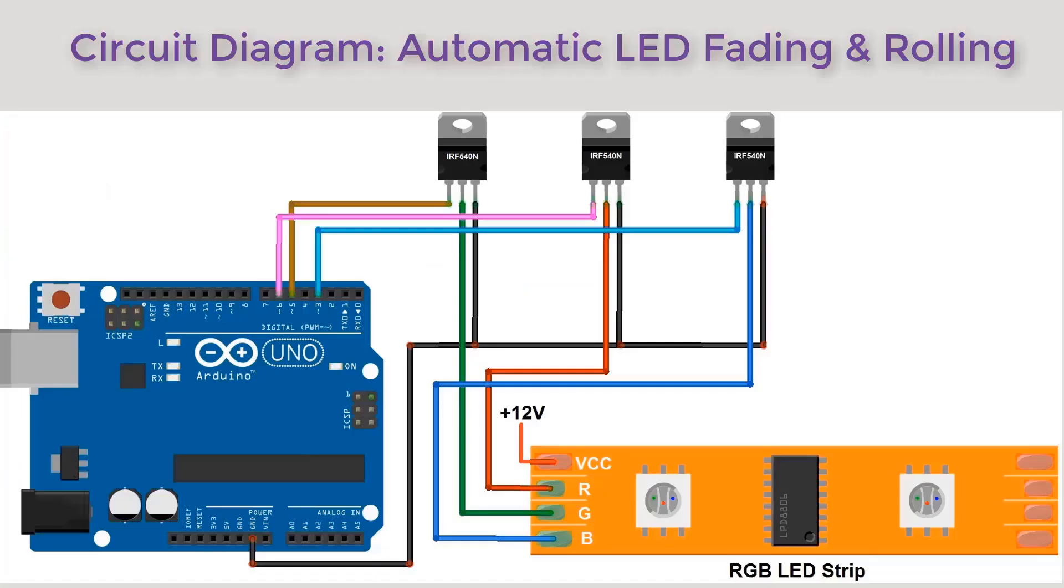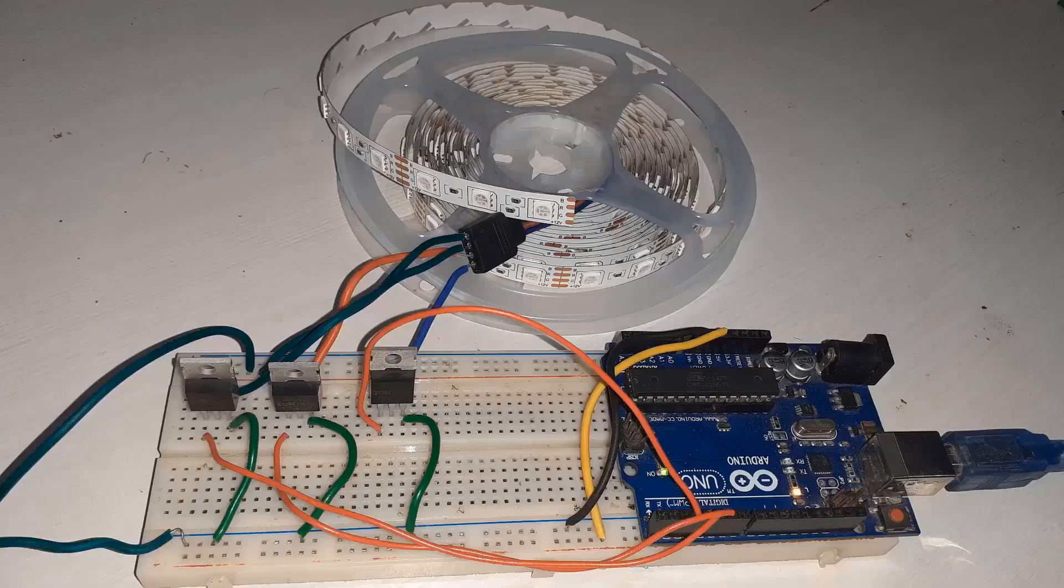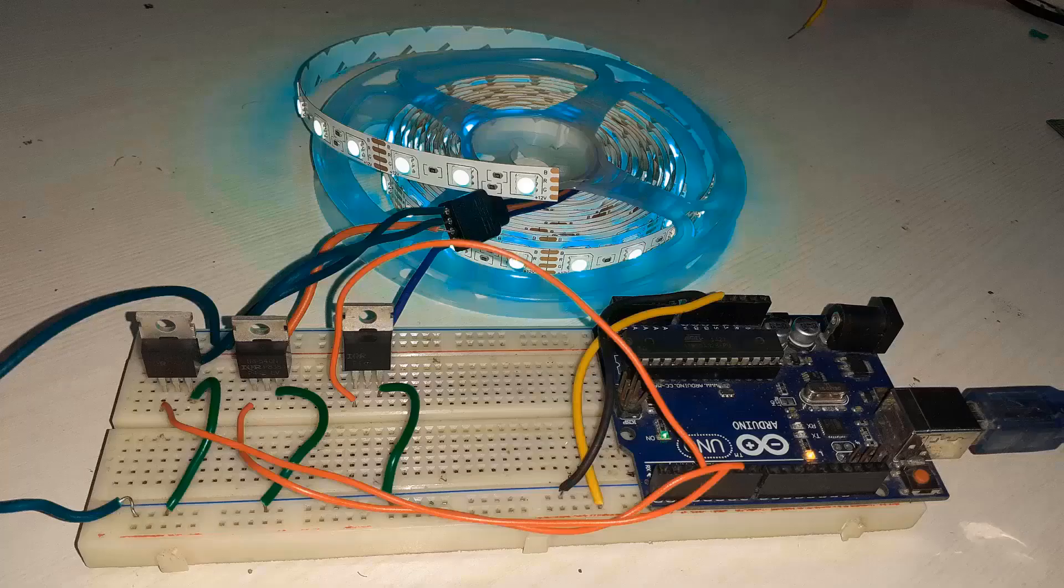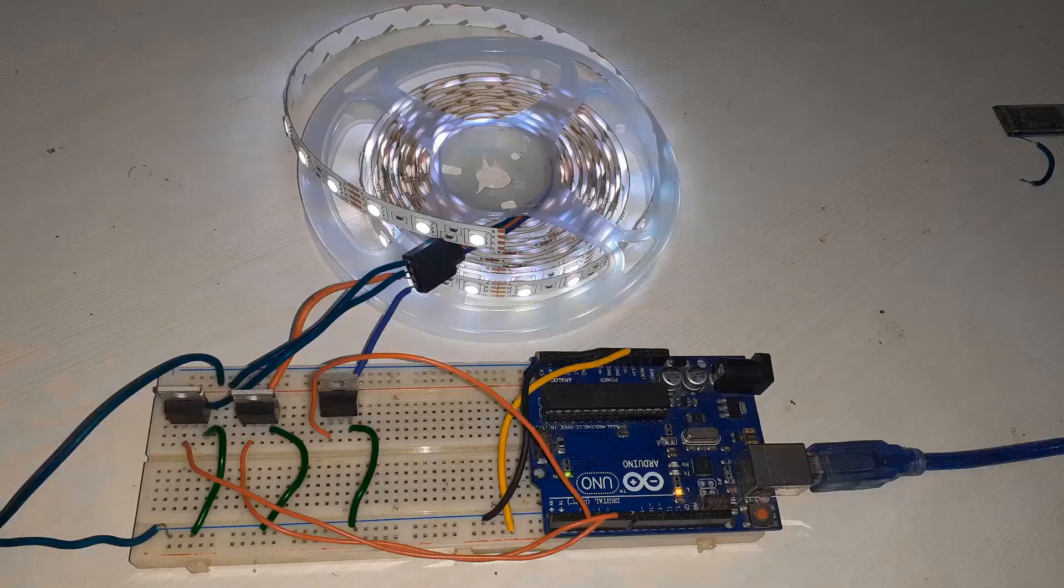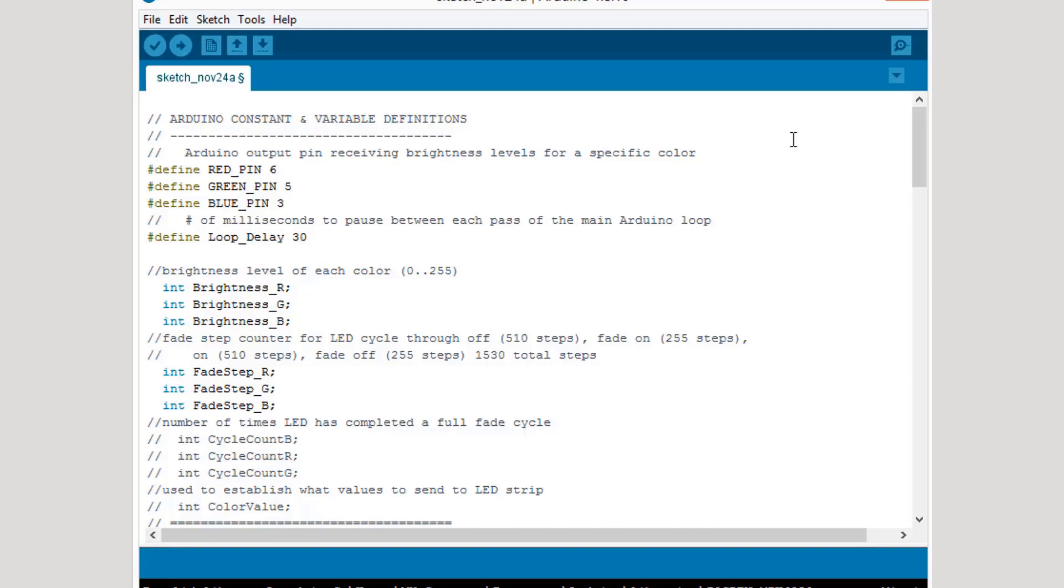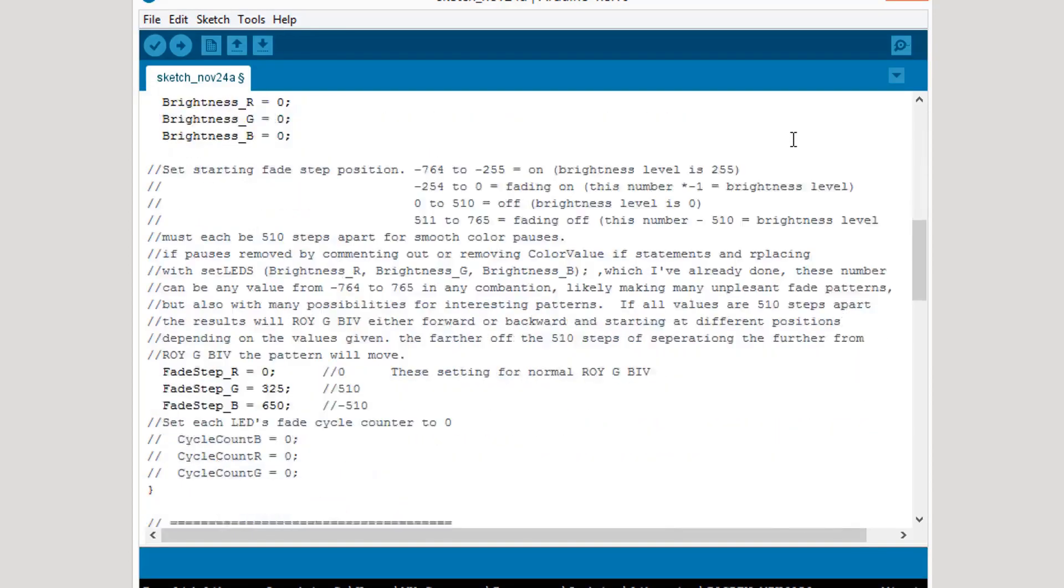In case you want to control the LED fading and rolling without the use of any Bluetooth, make the connection like this. Simply remove Bluetooth. Once the code is uploaded, the LED will automatically start fading and changing color without the use of any Bluetooth module. Here is the code. Simply upload this code to your Arduino board.